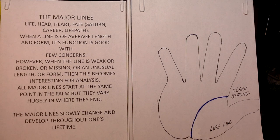Now, there are one or two others, but they're not used as prominently as these are. So these are the ones you have. When a line is of average length and form, its function is good with few concerns. So if you're analyzing or you're reading a palm, there's just so much you can say about it. Other than the person is well-balanced, good diet,